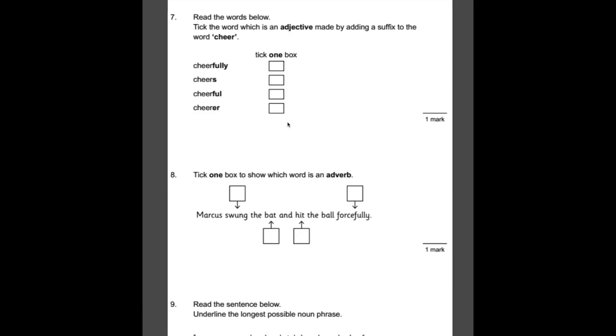Number seven, tick the word which is an adjective made by adding a suffix to the word cheer. So remember, an adjective is a describing word. It describes a noun. So which one of these would describe a noun? Let's use an example, the man. It would be the cheerful man. So that's our answer.